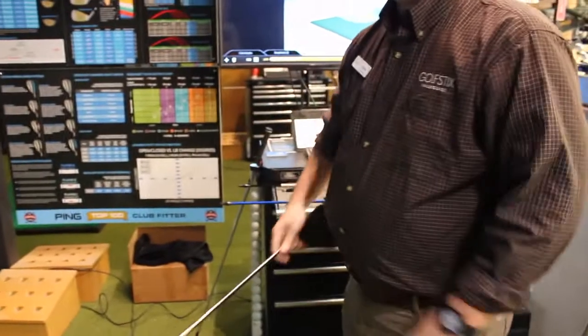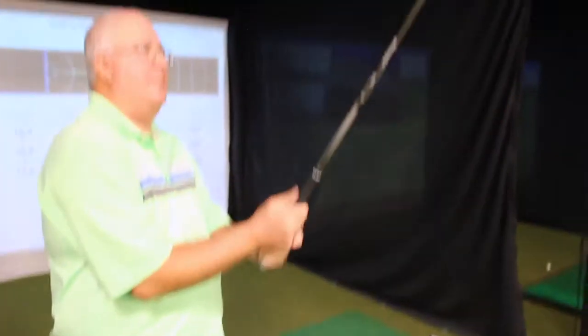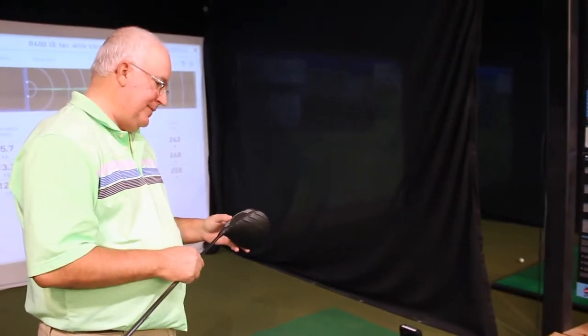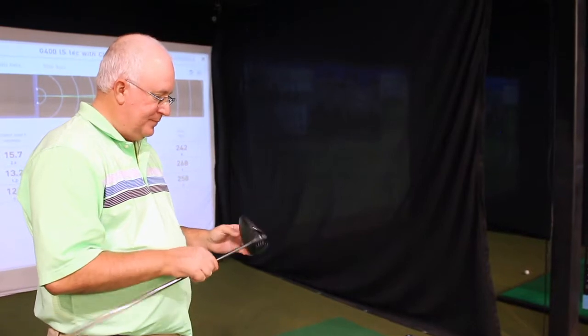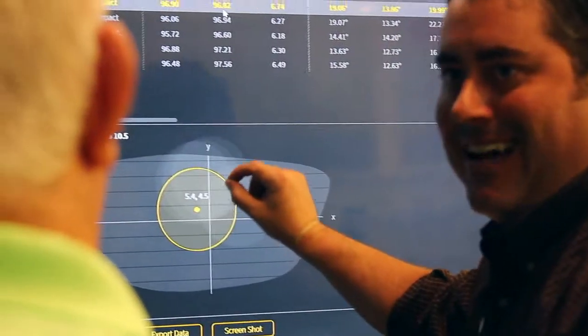Yeah, so from the data that you get from Gears, what are maybe one or two of the most crucial that help you make that determination? Okay, so face mapping, where exactly you hit it in the face. Ideally, we all want to hit it in the center of the face, so that's one of the first things I'm gonna look at is how large a spread you are across the face, and where that pattern is on the face of the golf club.